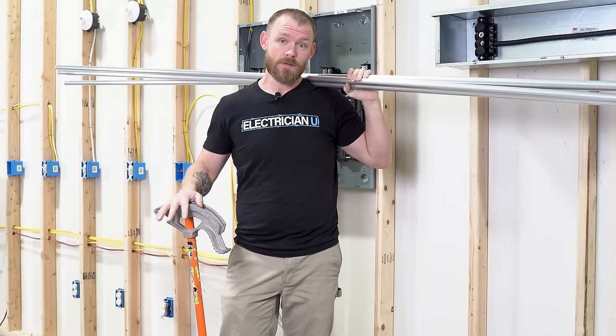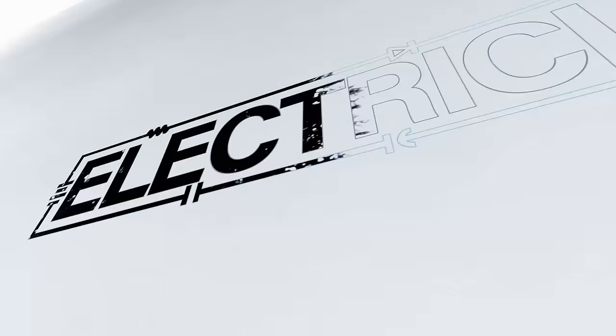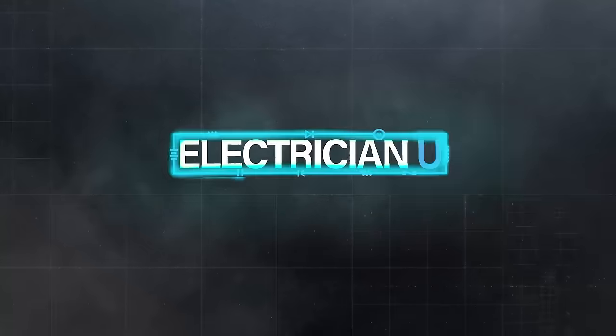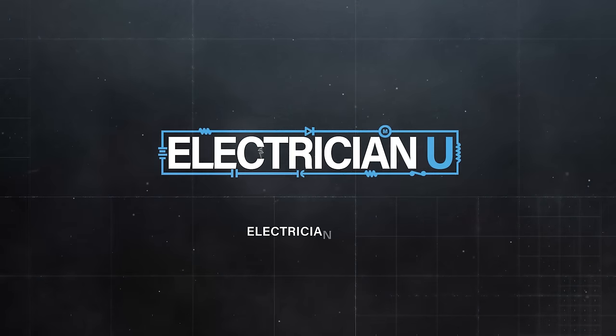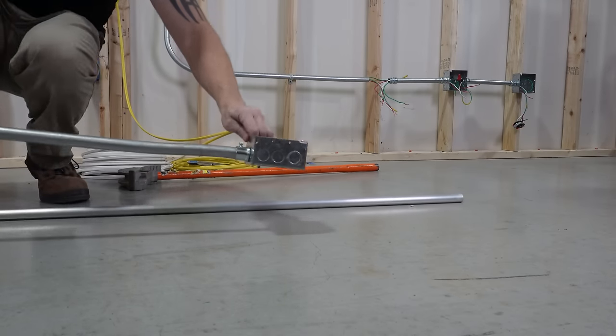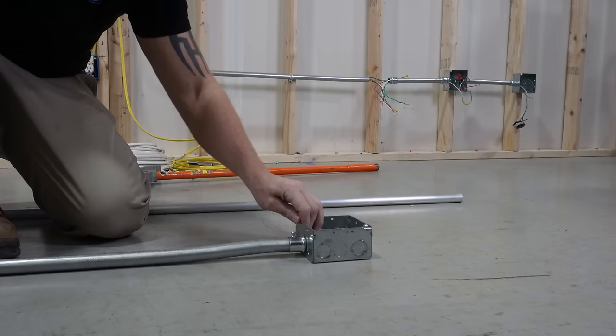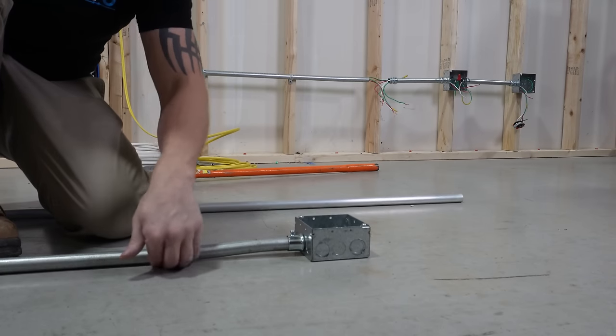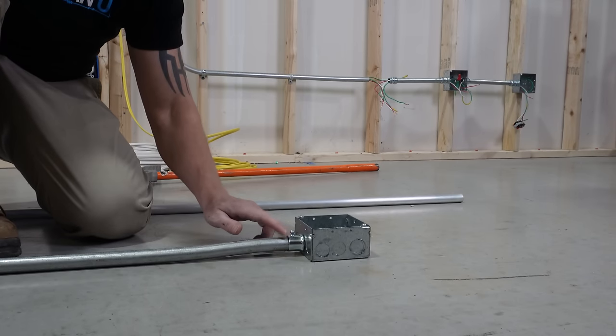How do we bend a box offset in conduit? So this is what a box offset looks like fully finished. You can see it's sitting down on the bottom, bends up slightly, and goes into that connector.